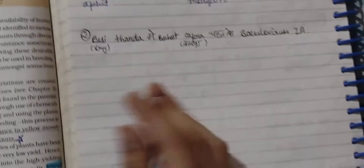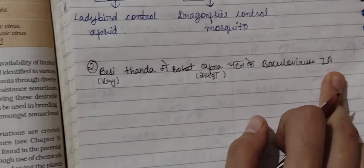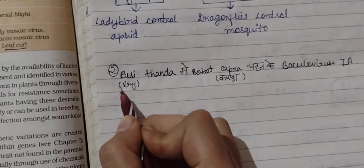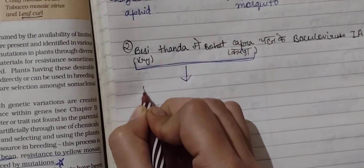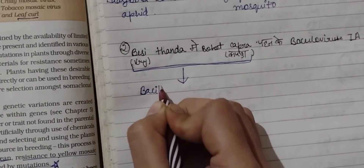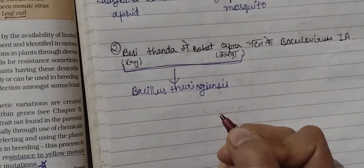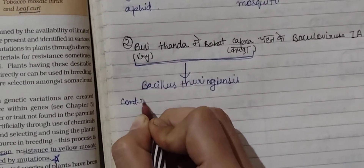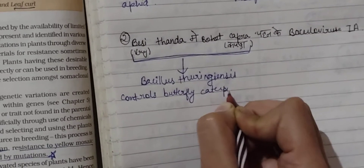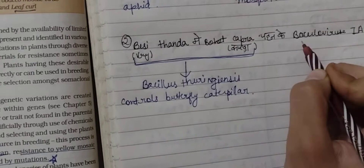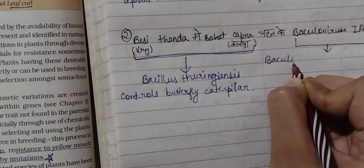Coming to the next sentence: 'Basi thanda me bohat kapra' — this implies Bacillus thuringiensis. And from 'baculovirus' in the sentence, we understand that baculovirus controls butterfly caterpillars.